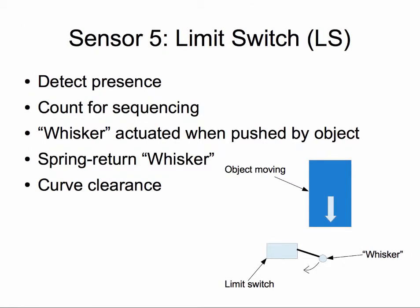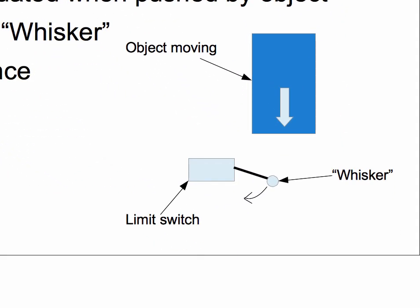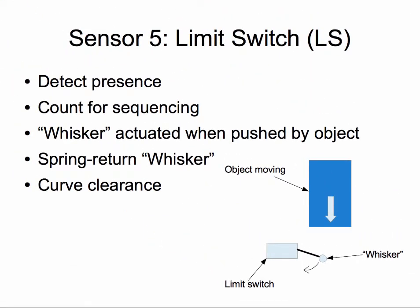The last sensor is the limit switch, which is used to detect the presence of a component or for counting and sequencing components. Every time the whisker is actuated, when a part or component goes through, a signal is sent by the sensor. The whisker springs back to its original location when it is not actuated. Limit switches are also used when cards are going around corners and we want to ensure that the card is out of the corner before the other one goes in. A limit switch is put at the entrance and another one at the exit. The counter goes to 1 whenever a card enters the curve and goes back to 0 when it exits. The system then only sends a card in when the count is 0.